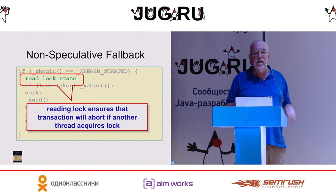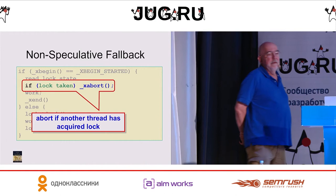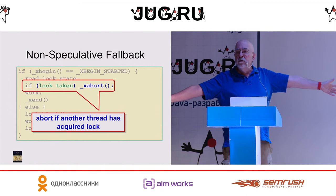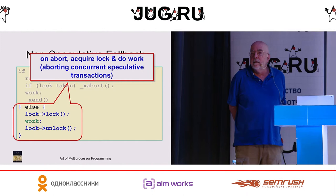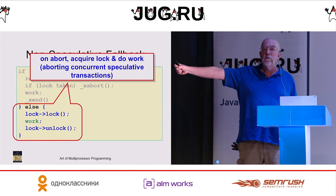It's important to read the data but not modify it. If it turns out that the lock bit I read is already acquired by someone else, then there's nothing I can do, so I'm going to abort the transaction. Underscore xabort says I want to cancel this transaction. If your transaction fails, then you say, well, I tried being nice — that didn't work — so I'm just going to acquire the lock, do the work, and then unlock. Notice that by acquiring the lock, I'm going to abort any other speculative transactions that are trying to run concurrently.